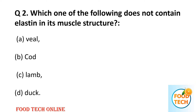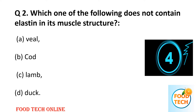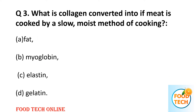Question 2: Which one of the following does not contain elastin in its muscle structure? A: veal, B: cove, C: lamb, D: duck. Answer: B, cove.